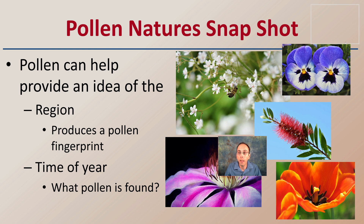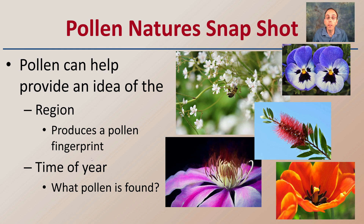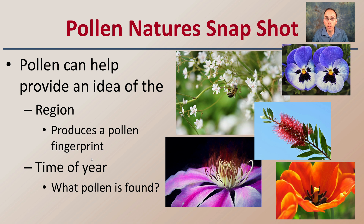Pollen can be like nature's snapshot — what does that mean? Pollen can help identify the area or region that a particular crime may have occurred. It can produce a pollen fingerprint, meaning what plants exist in what area. If we find that pollen, we know that individual or that garment would have to have been present in a certain region.